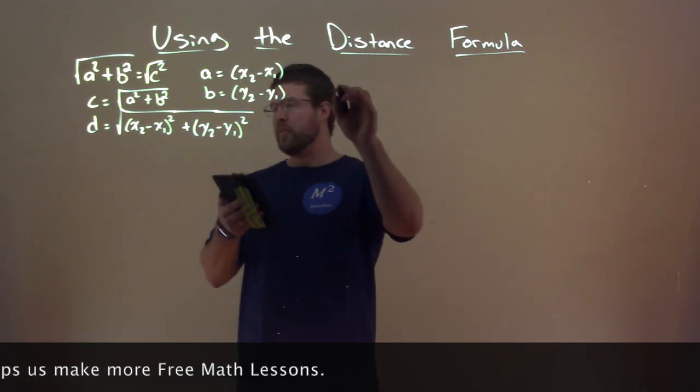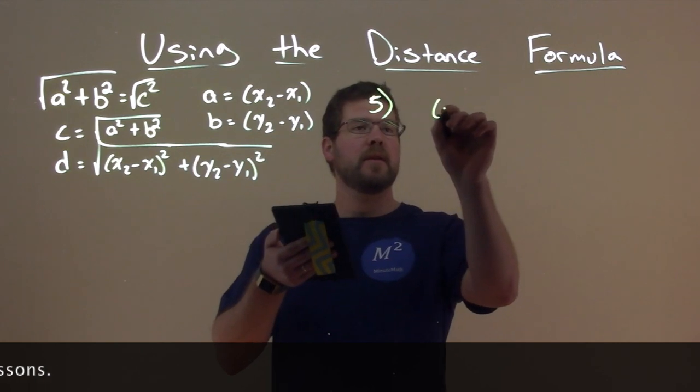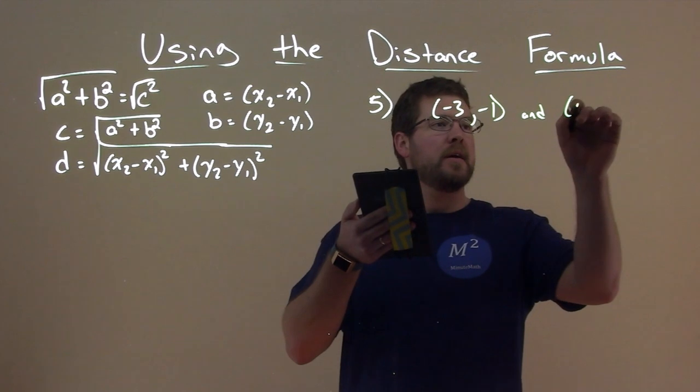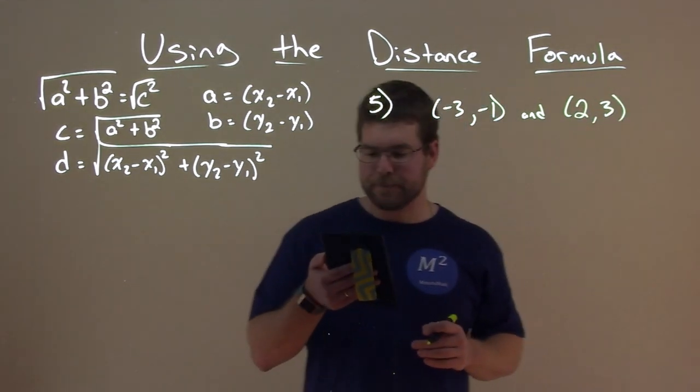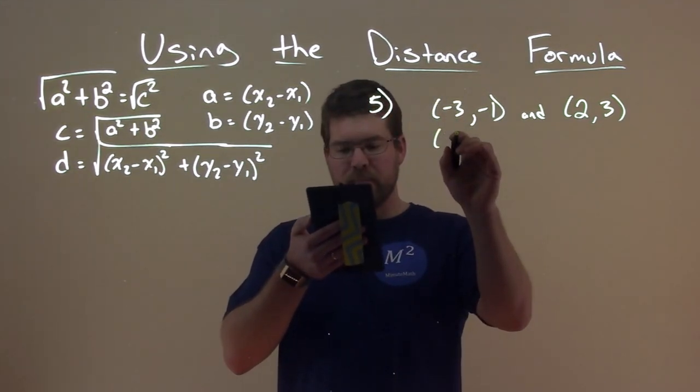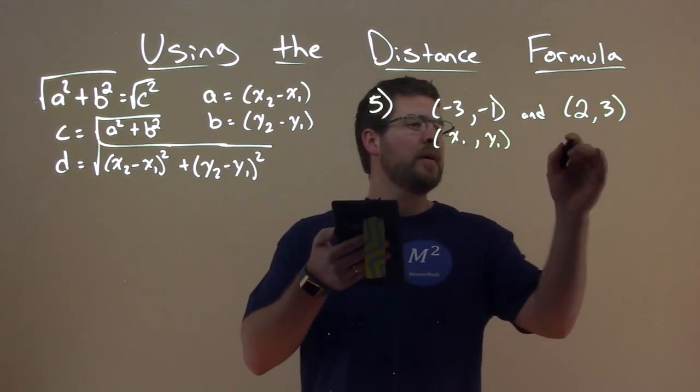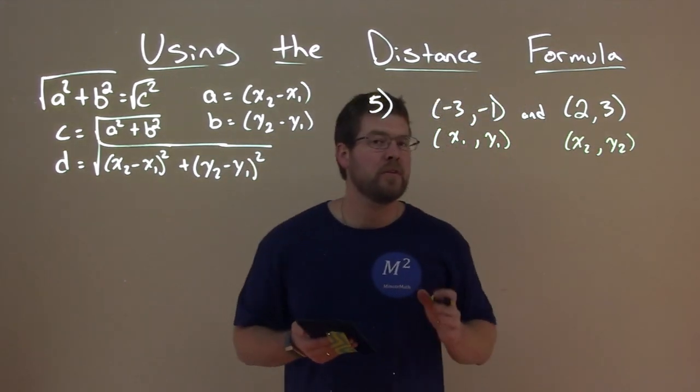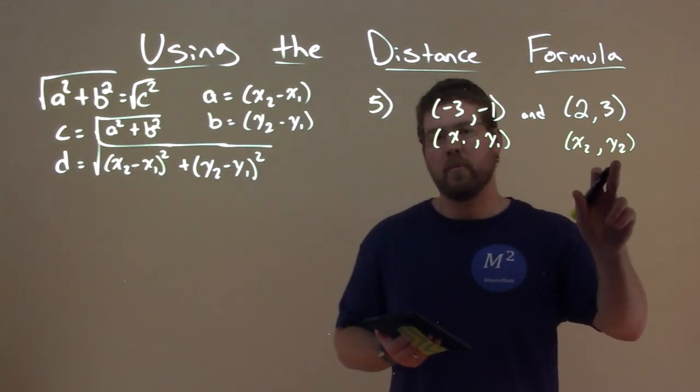So let's do it with an example here of using the distance formula. We have two points, negative 3, negative 1, and the other point is 2, 3. And we want to find the distance between these two points here. So let's use our distance formula. We have our first point, let's call this x1, this one's y1, and here we have x2 and y2. And in the beginning, it really makes it easier and helps students a lot. Just label them really quickly. This is x1, y1, x2, y2.